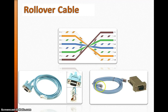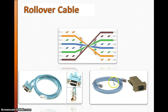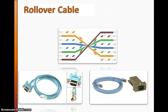If you look at pin number one on this side, it goes to number eight on the other side — it's a flipped cable. You also need this DB9 connector piece that connects to the PC serial port. That's what you need for the rollover cable.